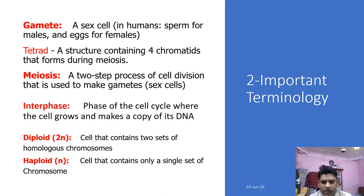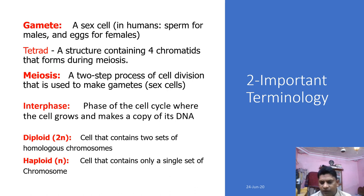Before starting the detailed process of Meiosis cell division, we should define certain terms. Gametes are sex cells which contain half, or one copy, of the chromosomes. In humans, gametes are called sperm in case of males, and egg cells in case of females. Tetrad or bivalent is a structure which consists of four chromatids, formed in Meiosis 1 prophase, in which two non-sister chromatids exchange genetic material. Meiosis is a two-step process of cell division used to make gametes or sex cells.